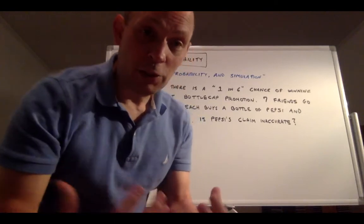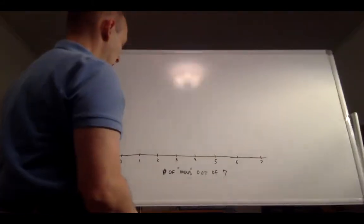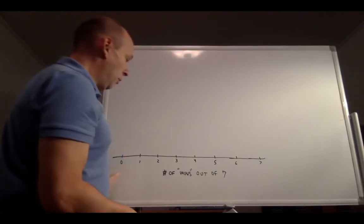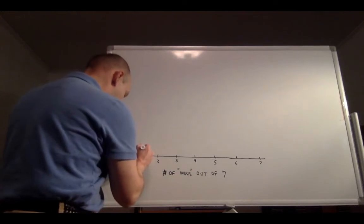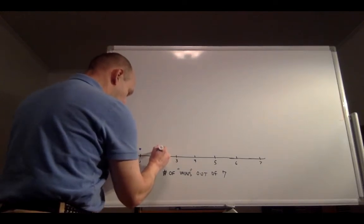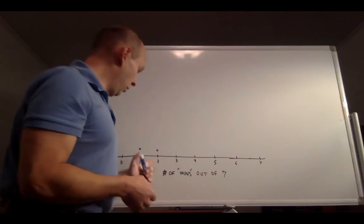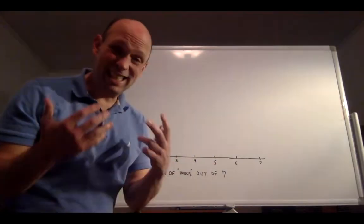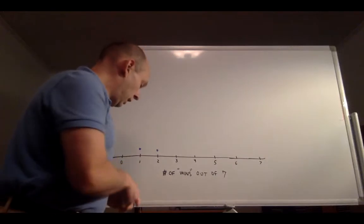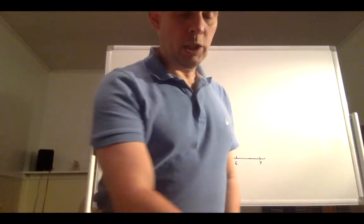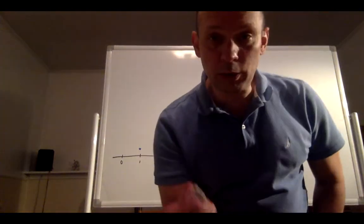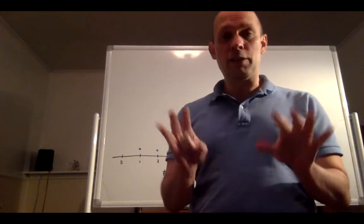Now I want to start collecting the results I'm getting. So let's start making a dot plot out of it. So this is the number of wins out of 7. The first time I did it, I had 1 win out of 7. The second time I did it, I had 2 wins out of 7. Let's see how often these results come up. Notice, it's possible I get 0 wins out of 7, 1, 2, 3, 4, 5, 6. I suppose it's even possible to get 7 wins out of 7. Now, of course, it would take a very long time to do this by rolling the die over and over. So I'll speed it up a little bit by showing you how we can simulate. And this is interesting because it's like 2 layers of simulation. So by rolling the die 7 times, I'm simulating 7 friends going to the store. But now I'm going to simulate rolling a die 7 times in the calculator. So let's do that right now.